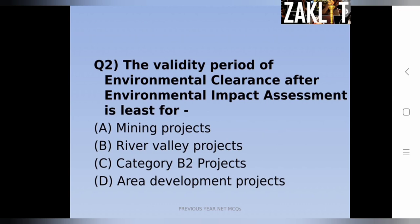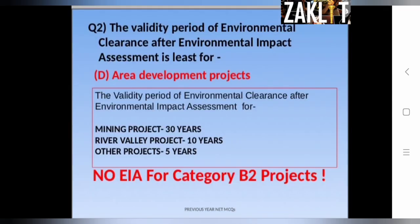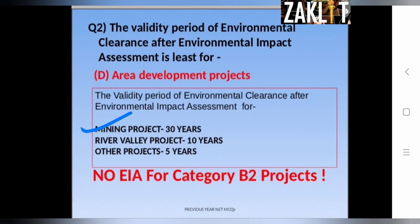The correct answer is option D, area development projects. For mining projects, the validity period of environmental clearance after EIA is 30 years. For river valley projects it is 10 years, and all other projects fall under 5 years.